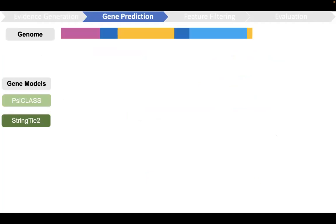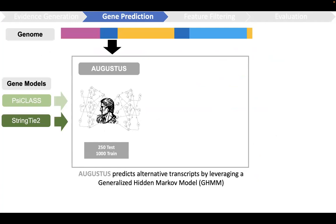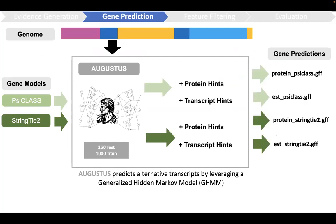The RNA-based gene models and genome are then used as input to Augustus, which predicts alternative transcripts by leveraging a hidden Markov model. These predictions are enhanced with the addition of protein and transcript hints, and later merged into an unfiltered model.